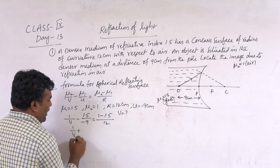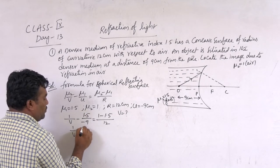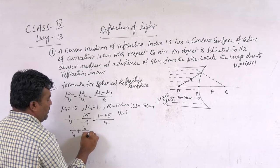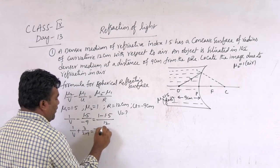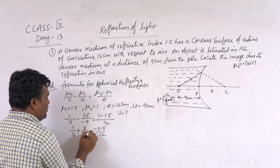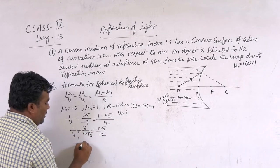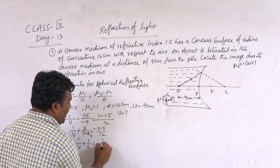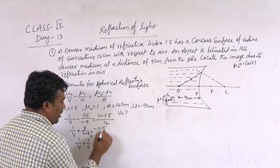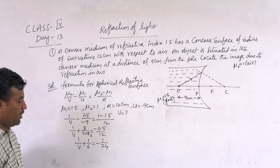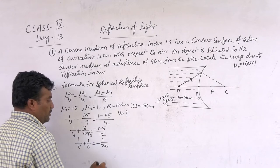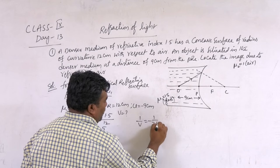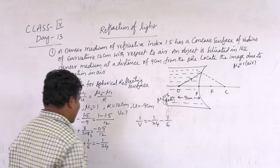So: 1/V plus 3/(2×9) = −0.5/2. That gives 1/V + 1/6 = −1/24, since 0.5 can be written as 1/2, and 1/2 divided by 12 = 1/24. Therefore, 1/V = −1/24 − 1/6.